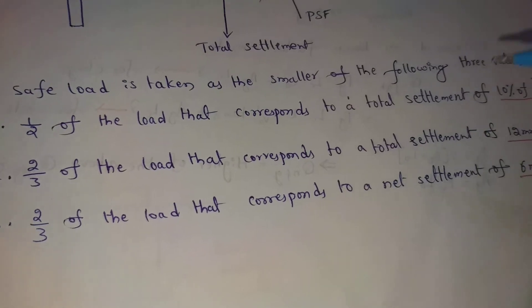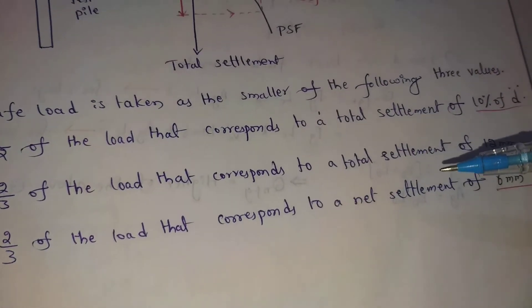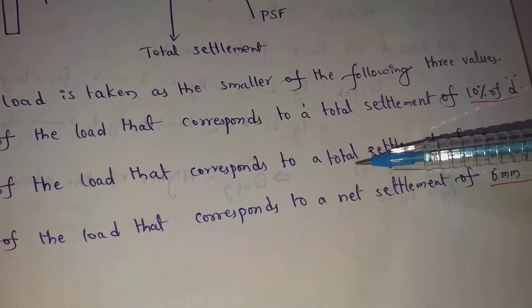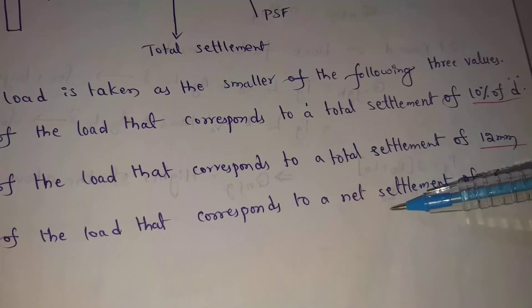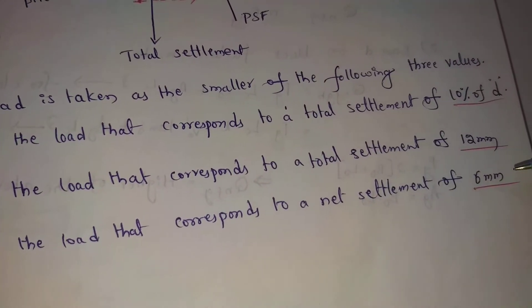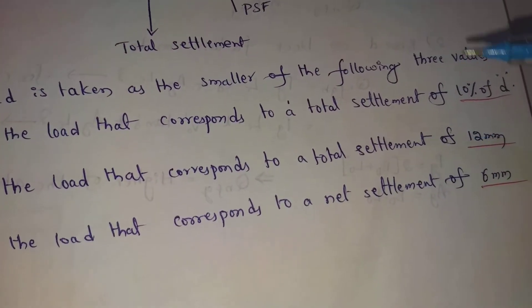Next: two-thirds of the load corresponding to a net settlement of 6 mm.